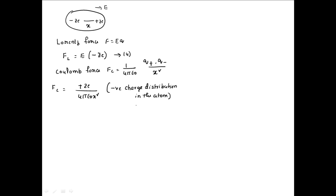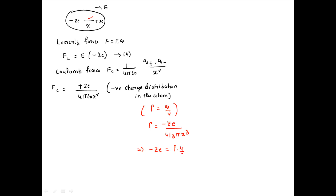To calculate this negative charge distribution, we take the charge density into consideration. We know ρ = Q / V. Because of the application of the electric field, the radius of the atom changes to x, so ρ = −ZE / (4/3)πx³. This implies the negative charge −ZE equals ρ × (4/3)πx³.